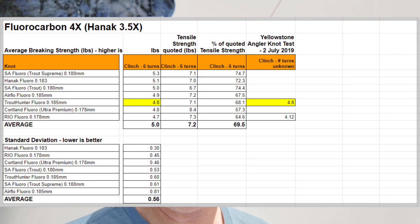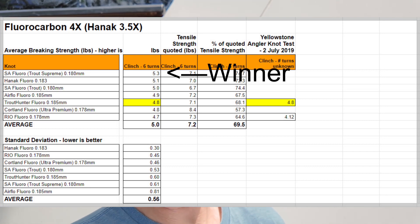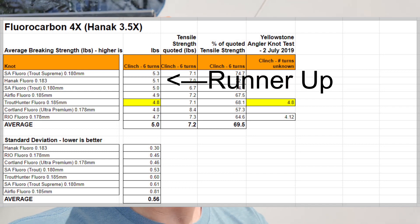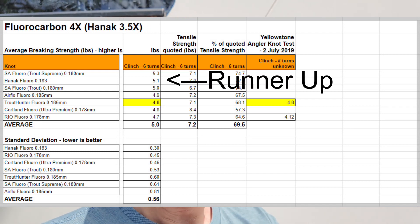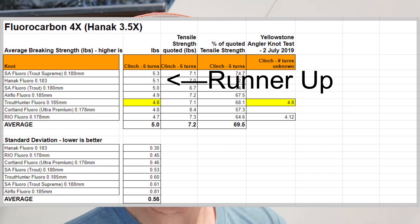In terms of fluorocarbon, the standout winner is the new SA Trout Supreme, which came in at 5.3 pound break strength using a clinch knot for 4X. It was narrowly followed by Haneck, the Haneck Competition 3.5X, if we're matching diameter. That was a 5.1 pound average break strength, wet knot break strength.